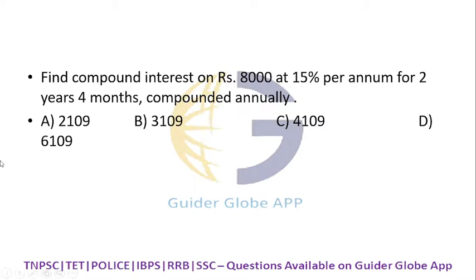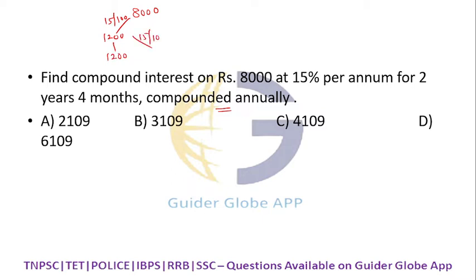Find the compound interest on ₹8,000 at 15% per annum for 2 years 4 months, compounded annually. For ₹8,000, multiply by 15/100 to get ₹1,200 — this is the first year interest. Second year interest is also ₹1,200. Interest on that interest: 1,200 × 15/100 = ₹180.